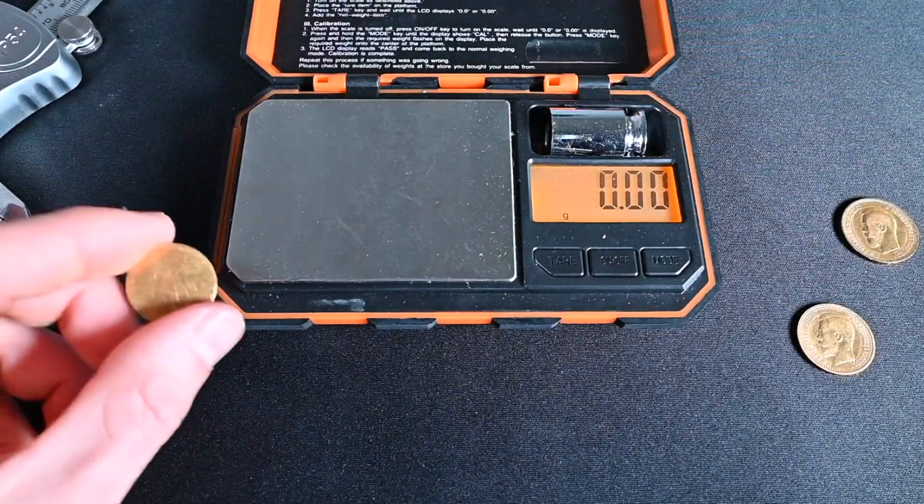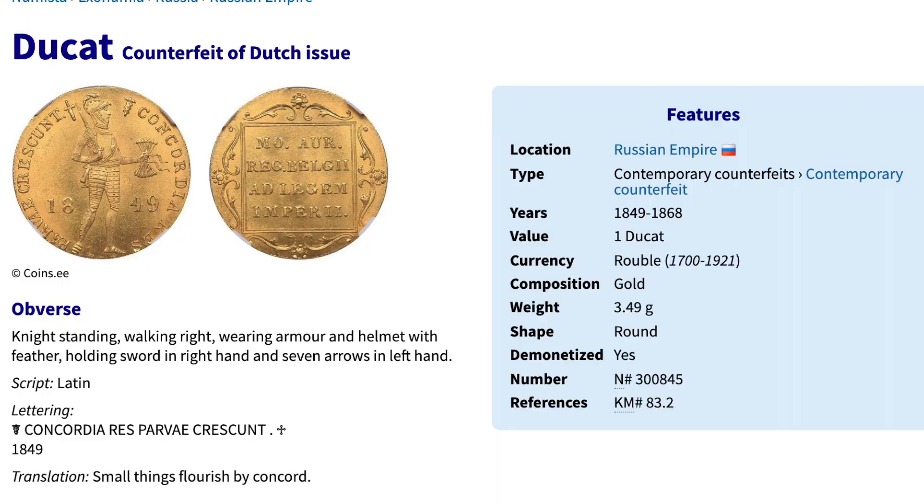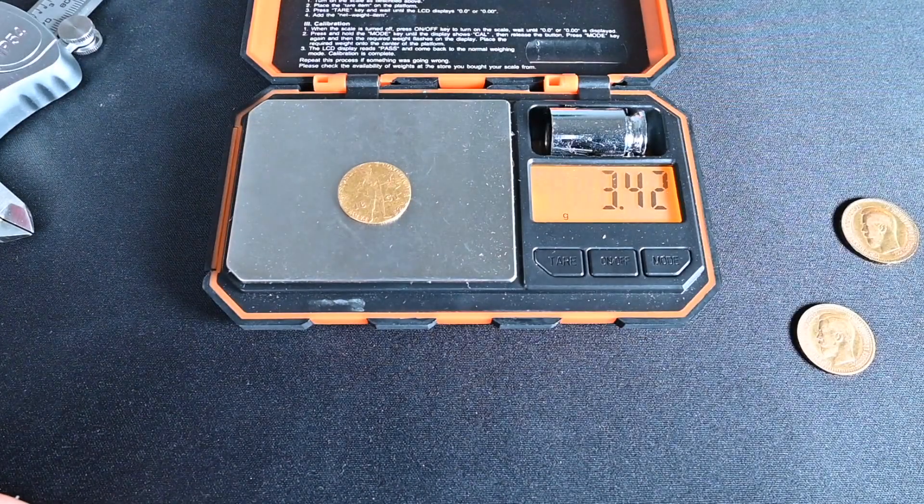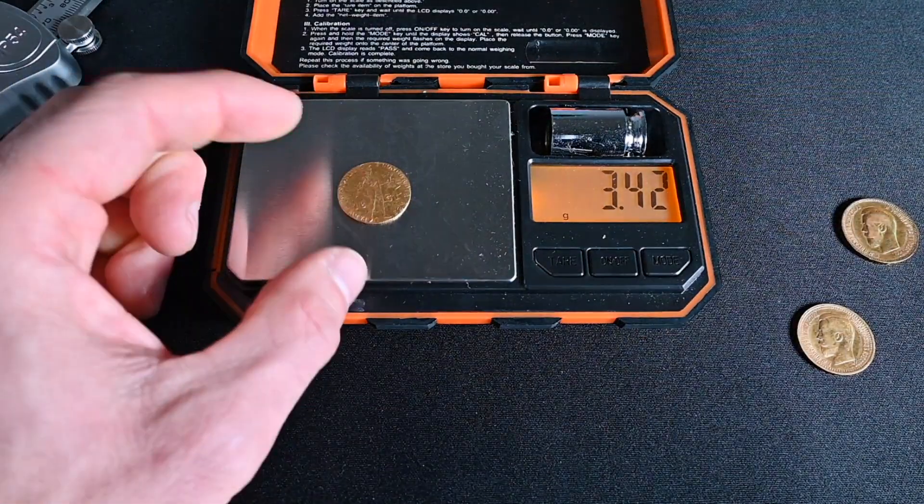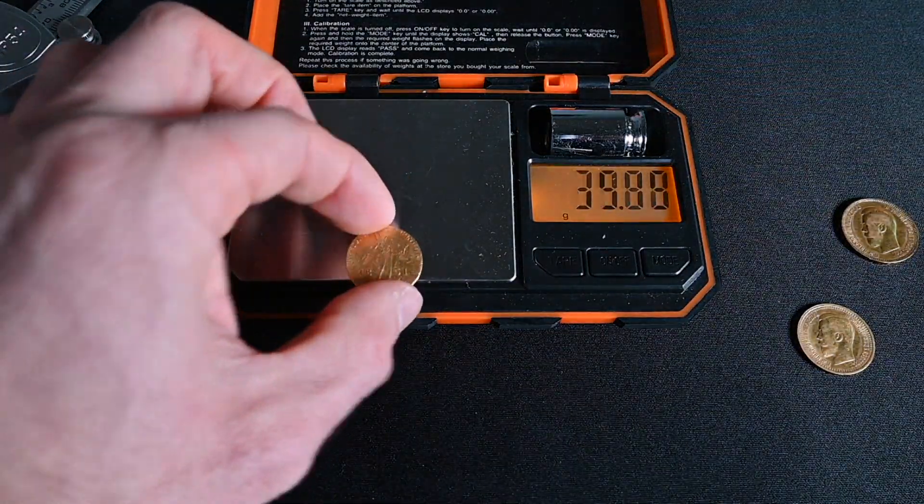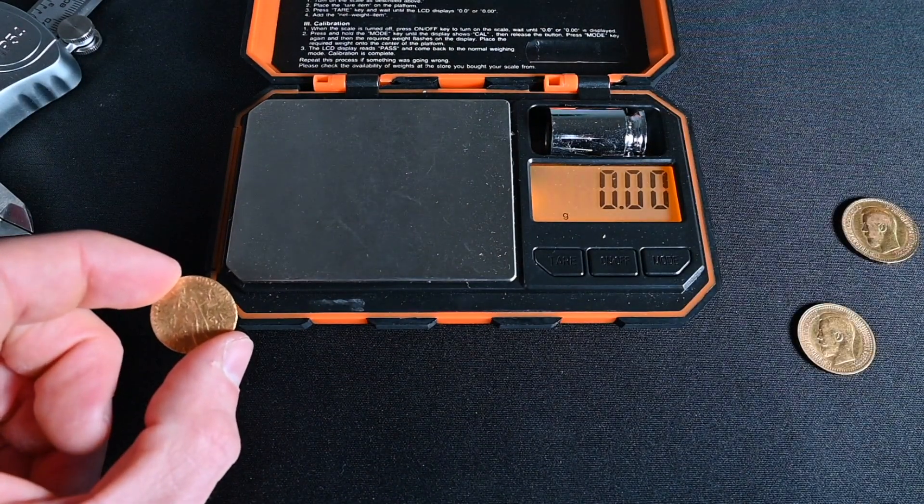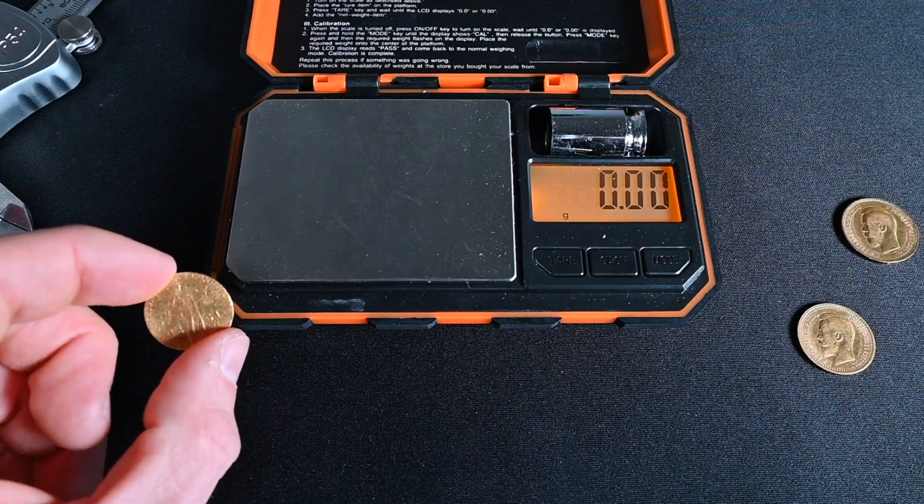Now this one, now this coin, on the other hand, I do have a weight for it. It's supposed to weigh about 3.49 grams. And we're going to take a look over here. Let's see. This one weighs 3.42. But it is very worn down, so it is reasonable that it would be a little bit off weight. But unfortunately, that's the only stat that I have about this coin. I don't actually have a diameter or thickness for this coin.